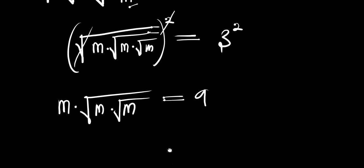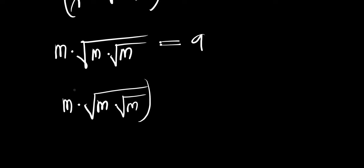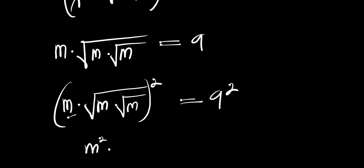The next thing we are going to do is to take another square. So we have m times root of m times root of m, all raised to the power 2, and this is 9 raised to the power 2. By doing that we are going to have m squared, and the square root here will be cancelled by the square, giving us m squared times m times root of m, equals 81.